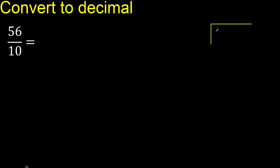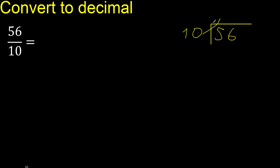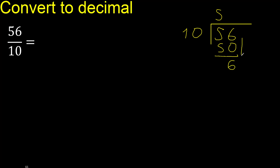56 divided by 10. 56 is not less than 10, therefore 10 multiplied by which number is nearest to 56 but not greater? 10 multiplied by 6 is 60 — that is greater. Multiplied by 5 is 50 — not greater. Subtract 6; there is no number that goes down, therefore complete. Always complete with 0.